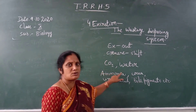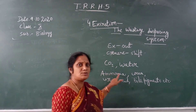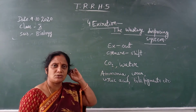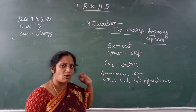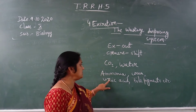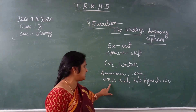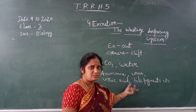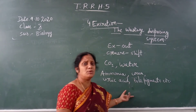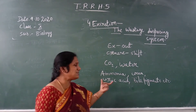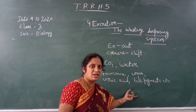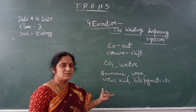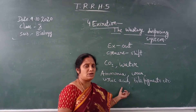Carbon dioxide is removed through the nose during the process called respiration. So what about ammonia, urea, uric acid, and bile pigments — how will they be removed from our body? A special system is there, called the excretory system, which removes this waste material from the body.